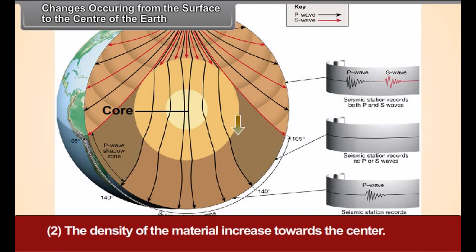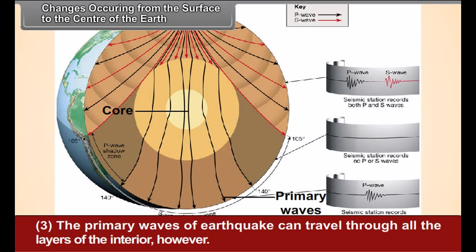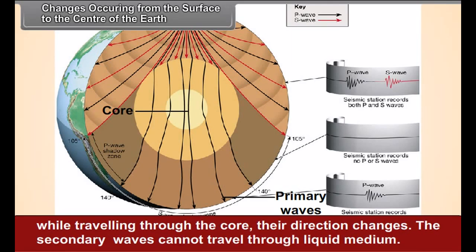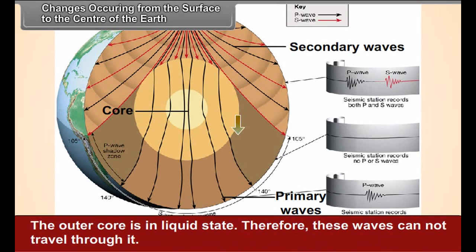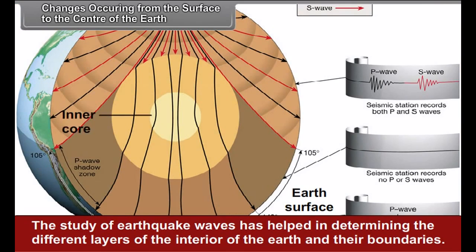The density of the material increases towards the center. The primary waves of earthquake can travel through all the layers of the interior. However, while traveling through the core, their direction changes. The secondary waves cannot travel through liquid medium. The outer core is in liquid state, therefore these waves cannot travel through it. The study of earthquake waves has helped in determining the different layers of the interior of the earth and their boundaries.